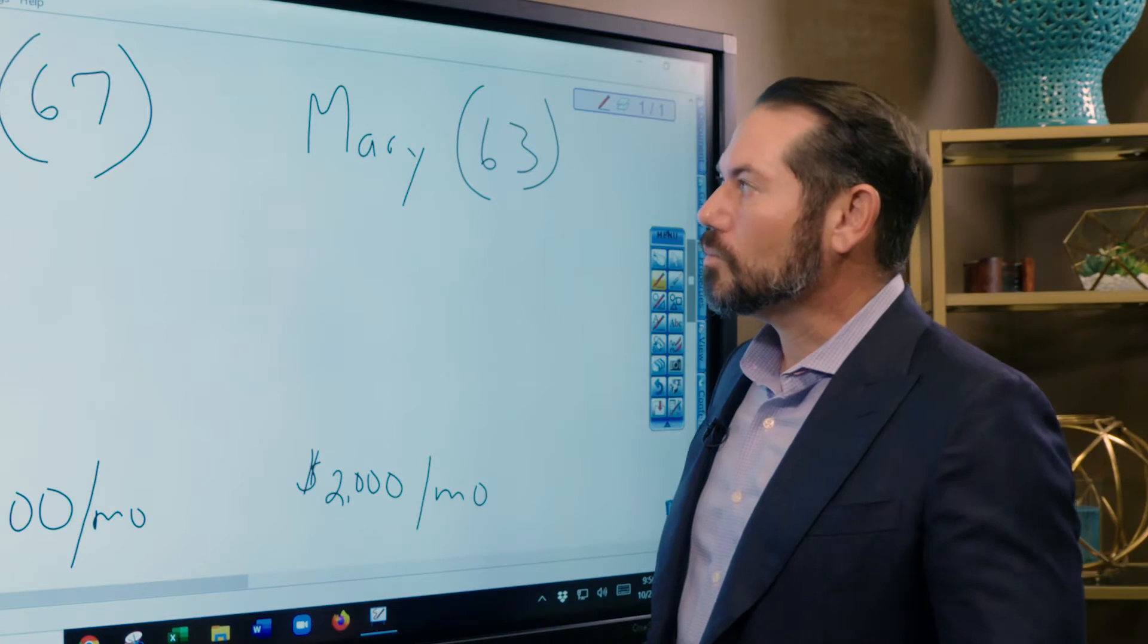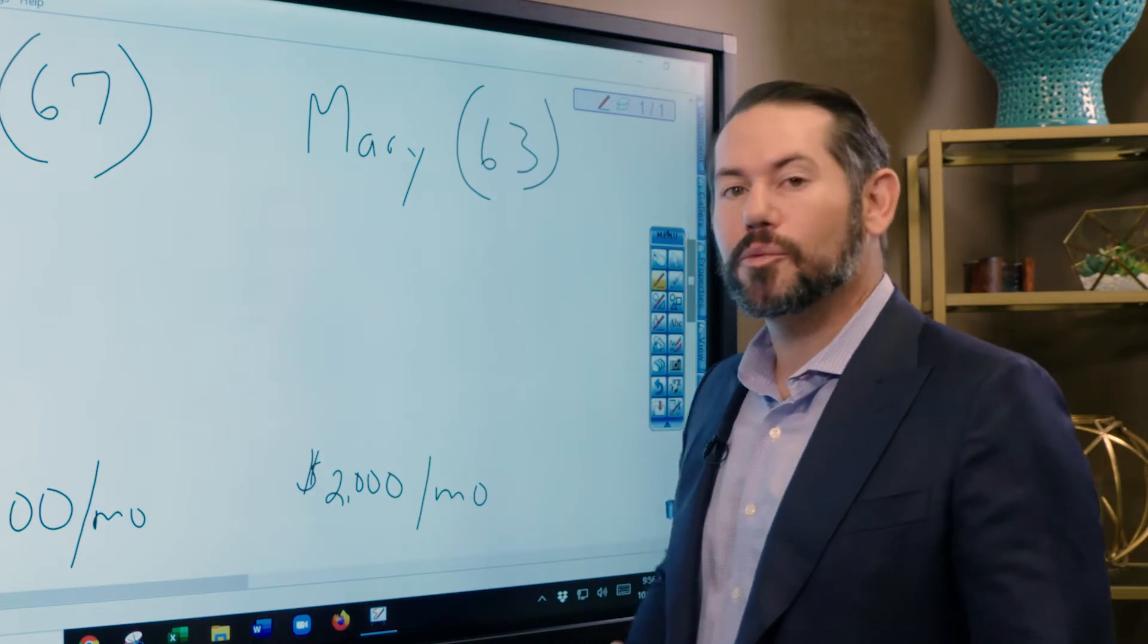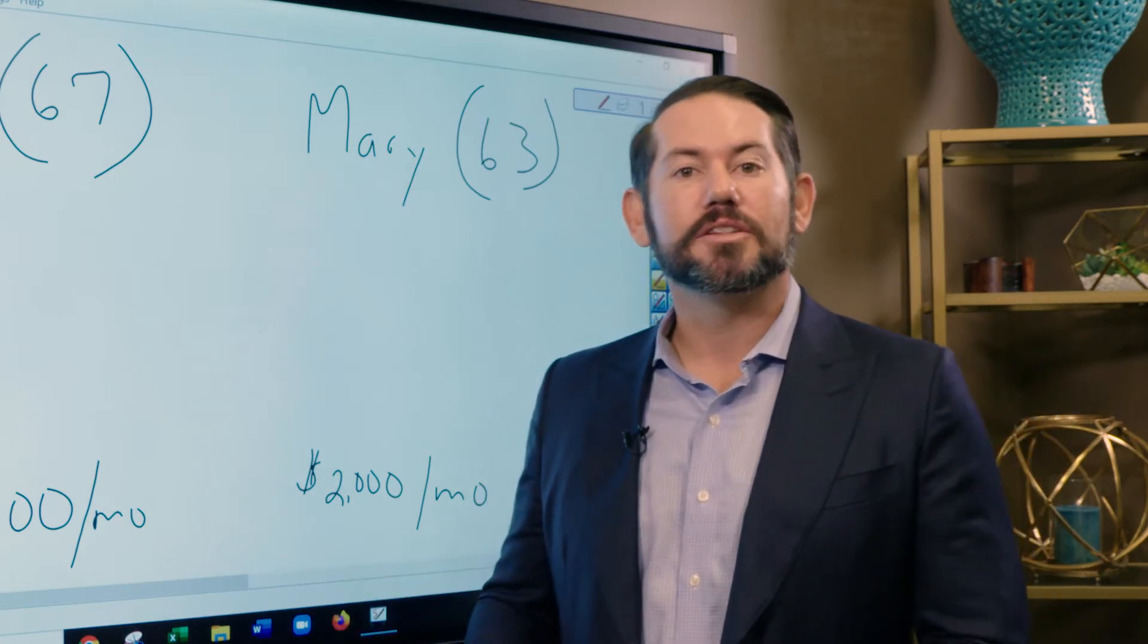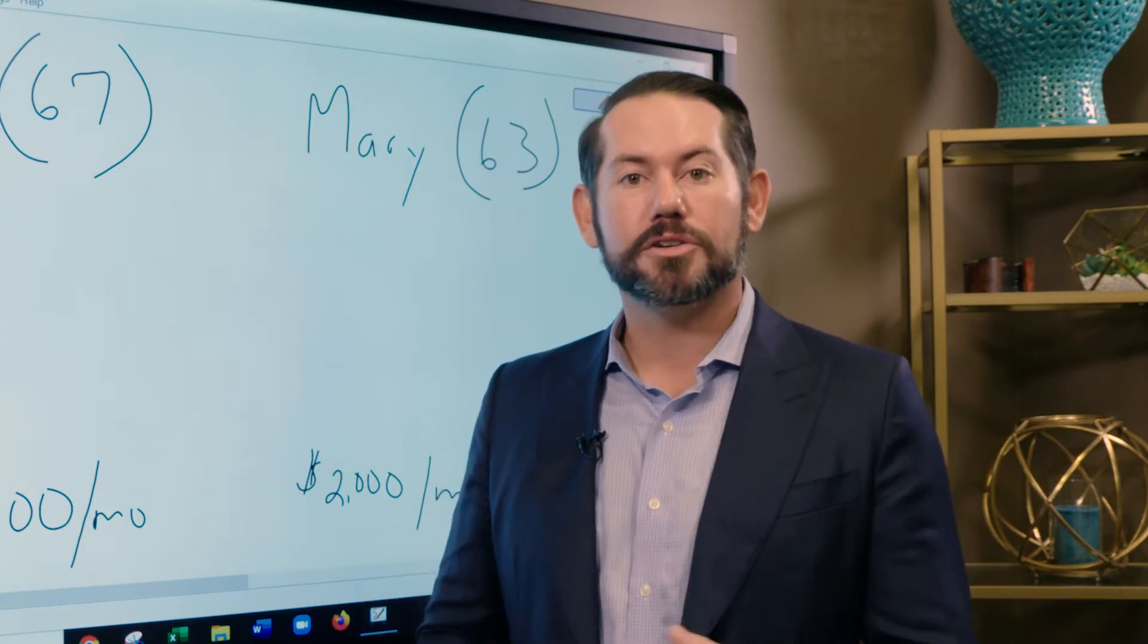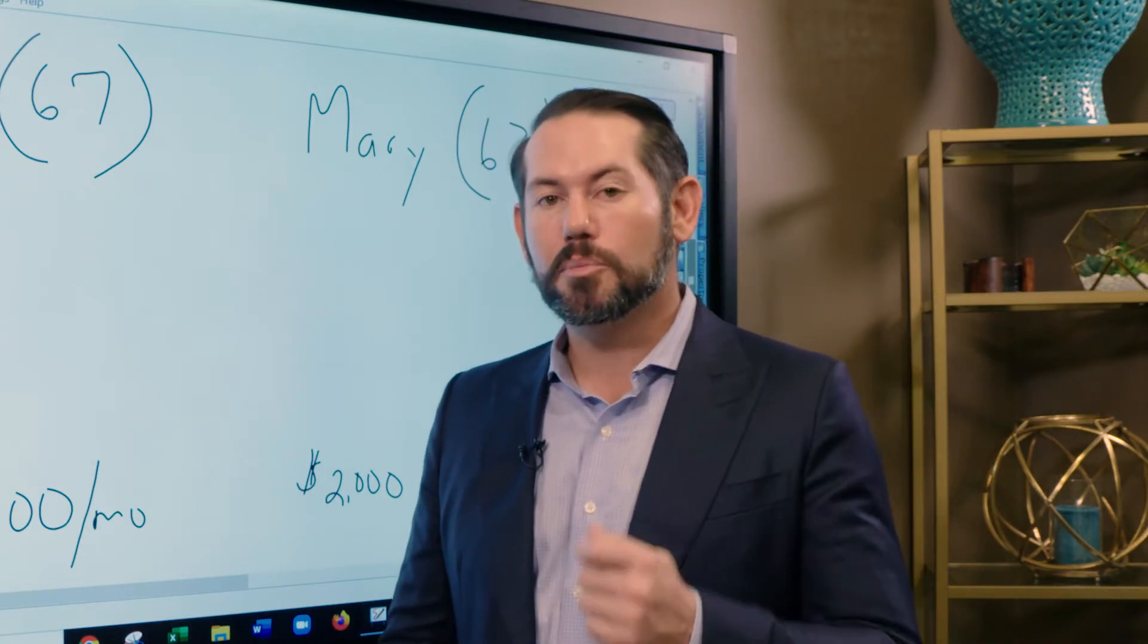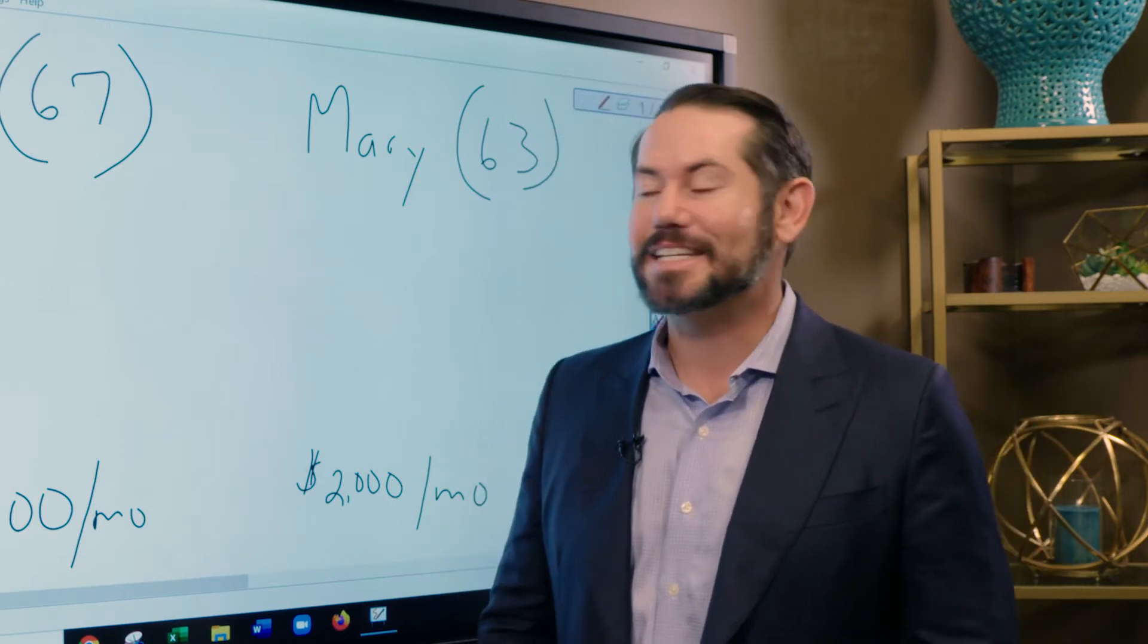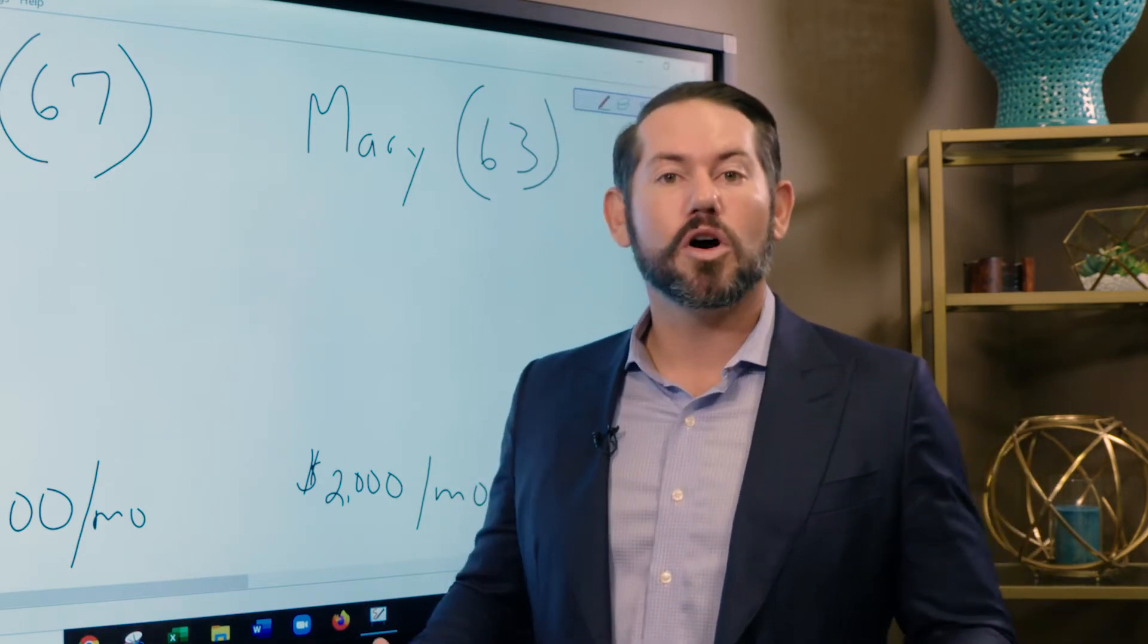It used to be that you could file a restricted application and get some percentage of your spouse's Social Security benefit prior to your full retirement age. But if you were born on or after January 2nd, 1954, that no longer is the case.